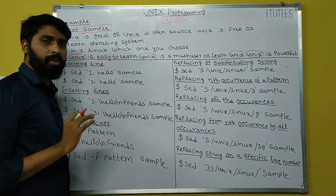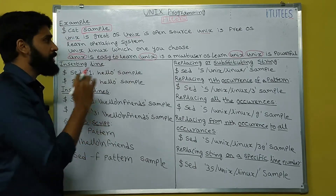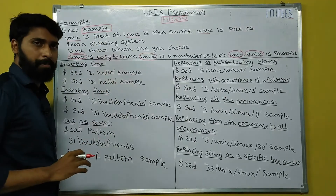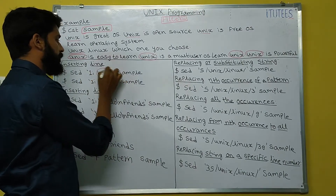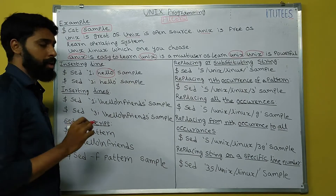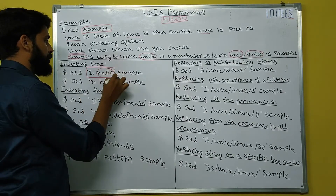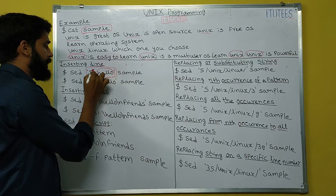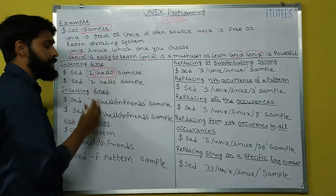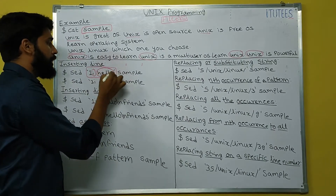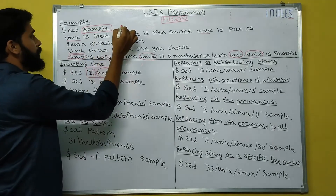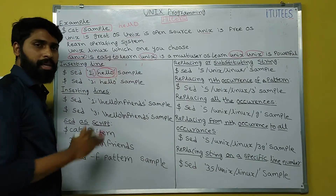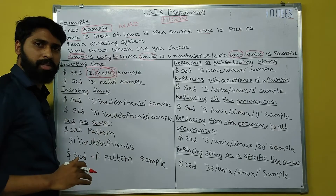This is the sample file. Now we are going to apply SED commands on this sample file. Inserting a line: I want to insert 'hello' as a first line in the sample file. The command is: SED, in single quotations, '1i' — where 'i' means insert and '1' means insert as the first line — followed by the content 'hello', and then the filename sample. The expected output has 'hello' as the first line, followed by the remaining file contents.